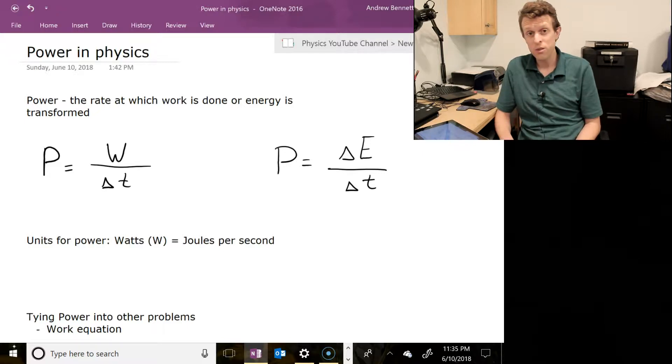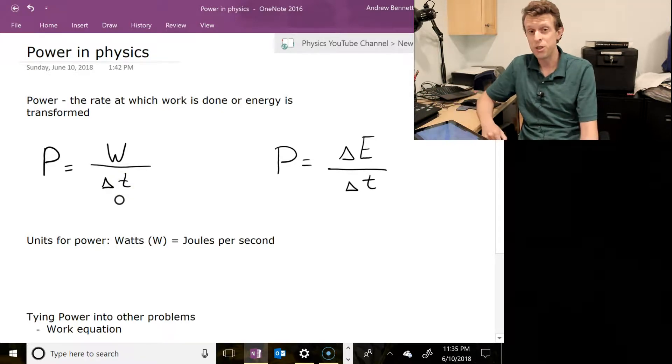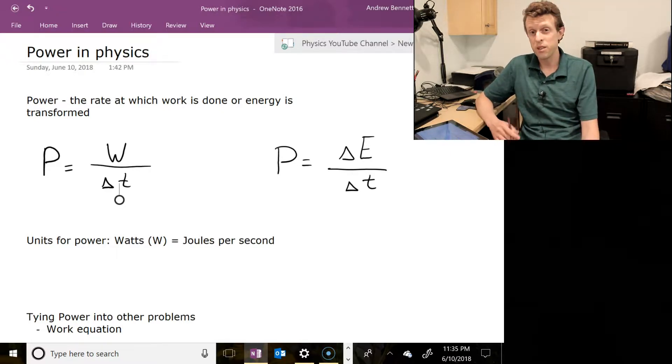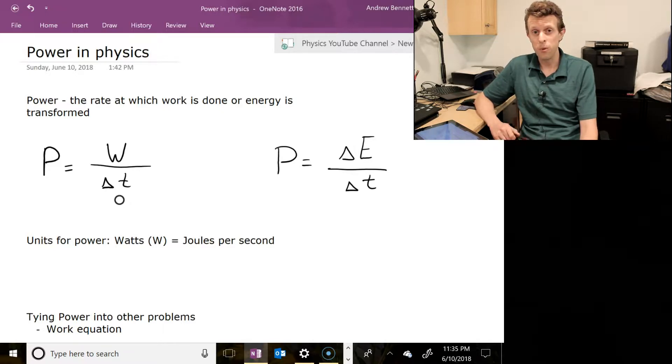Now, as an equation, we can write out power in a couple of different ways here. We have work over time, and we have change in energy over change in time. The delta E there can get subbed out for something like delta K if we're dealing with kinetic energy, or delta UG if it's gravitational potential energy, or any other energy type that we might want to include there. Electric potential energy or thermal energy or anything can go in there. Any energy type or combination of energy types is fine there as well.